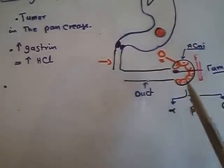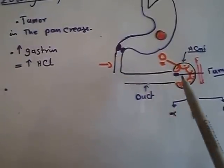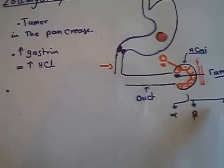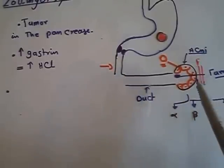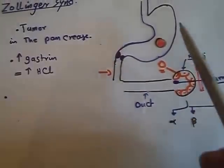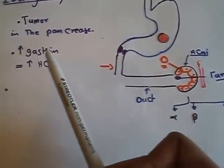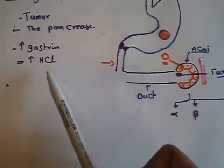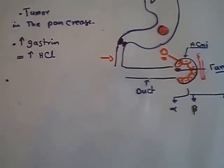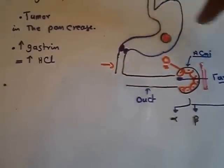A tumor in these D cells, instead of producing somatostatin, will produce gastrin. As I said, gastrin will cause an increase in HCl concentration, causing gastric ulcers.